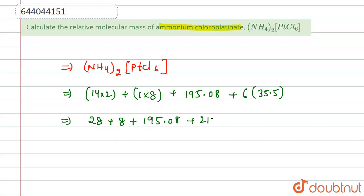Plus 213, and this comes equals to 444.08. So this is the relative molecular mass of ammonium chloroplatinate.